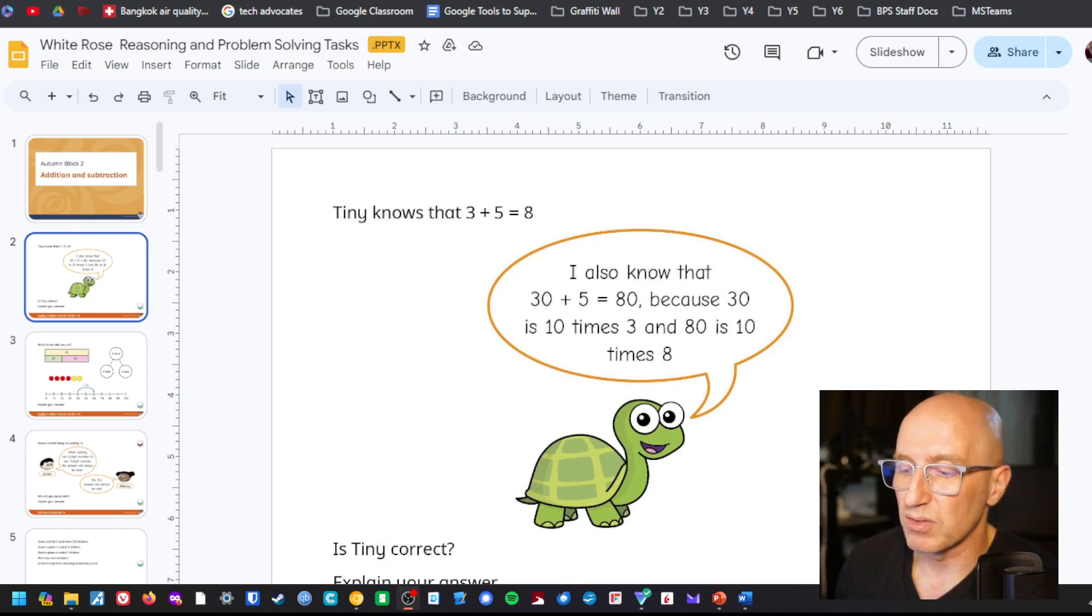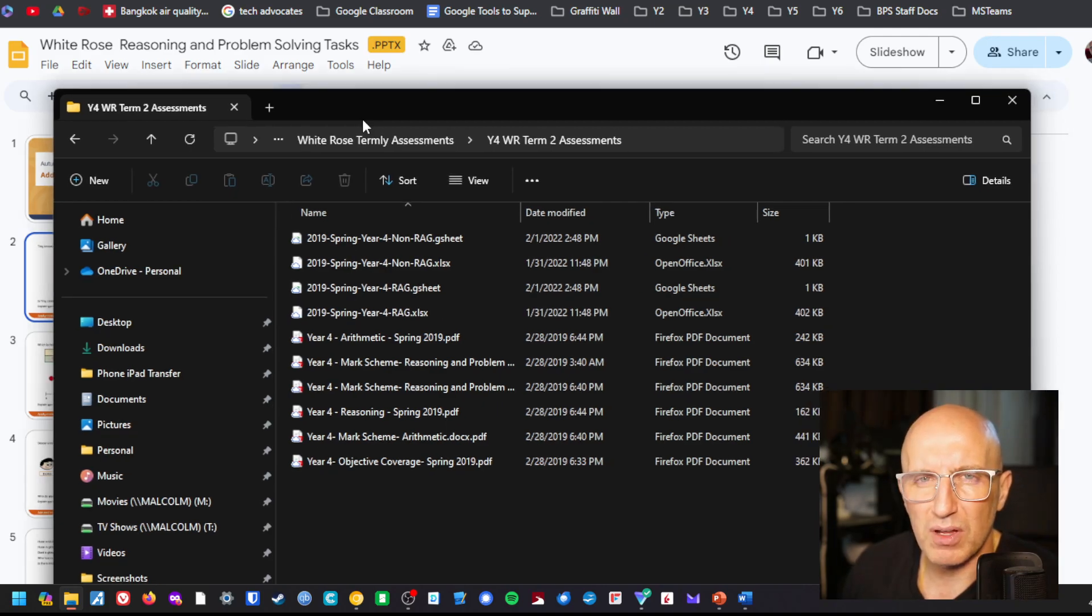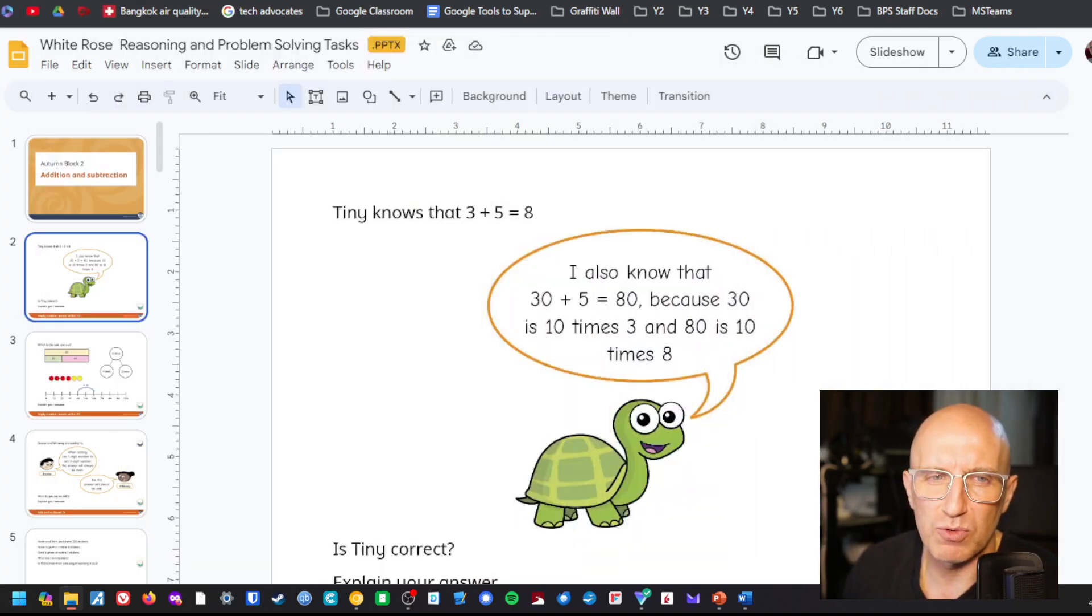If you look behind me, I've got a PowerPoint which I've opened up in the web. This is from my Google Drive, so from my Google Drive I've got White Rose resources that are PowerPoints and I'm going to open them up in Google Drive on the web in Chrome or Edge.